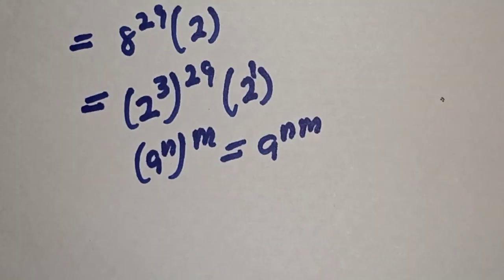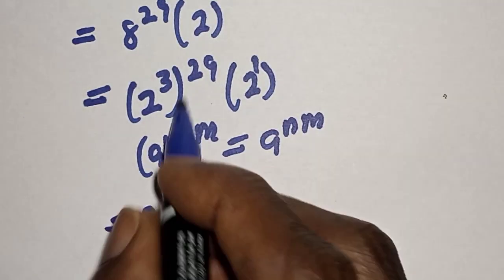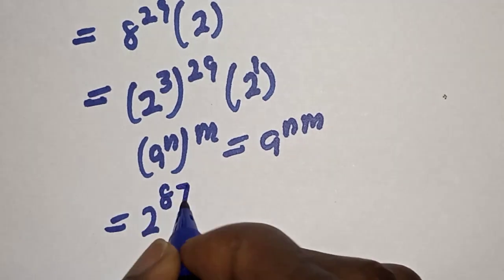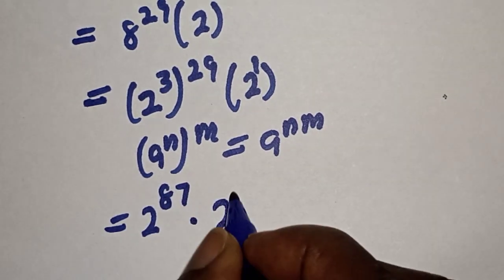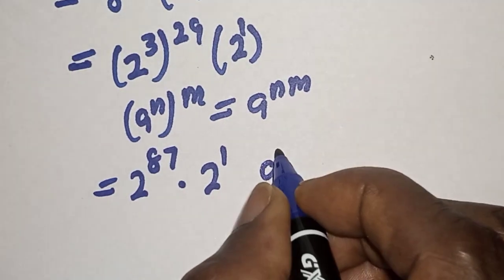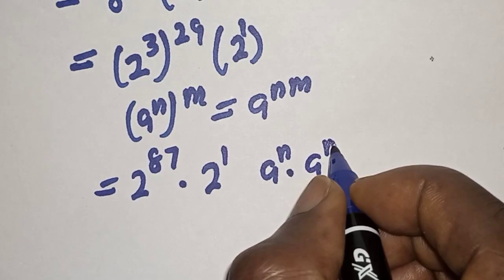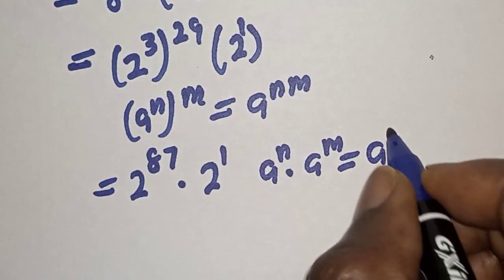Now we have 2 raised to power 3 times 29, that is 87, multiplied by 2 raised to power 1. Also remember this rule: if you have a raised to power n multiplied by a raised to power m, this is equal to a raised to power n plus m.